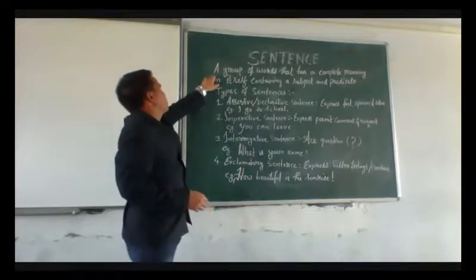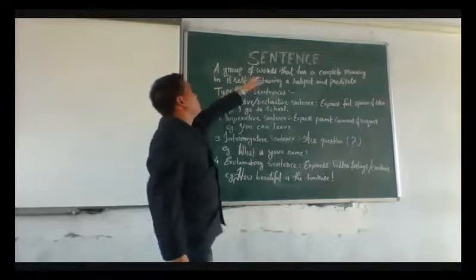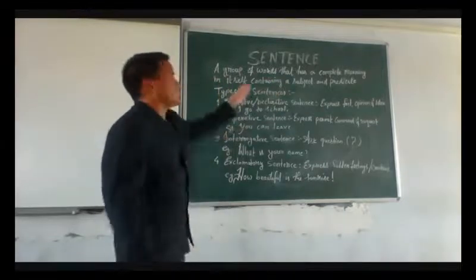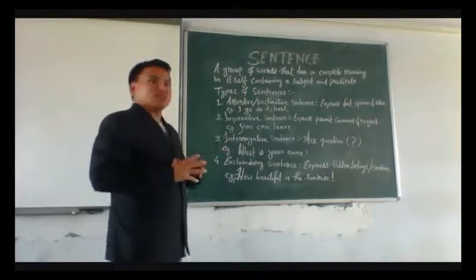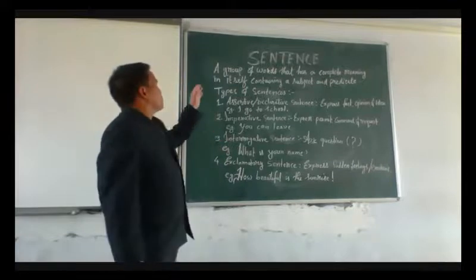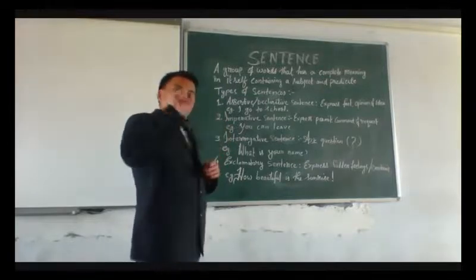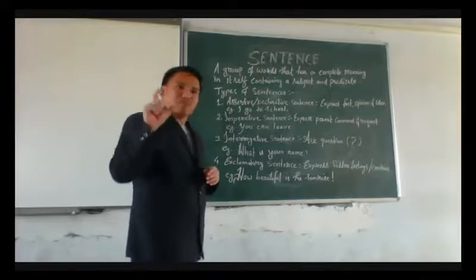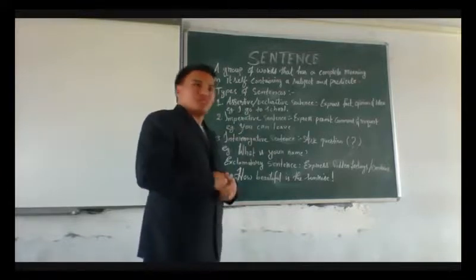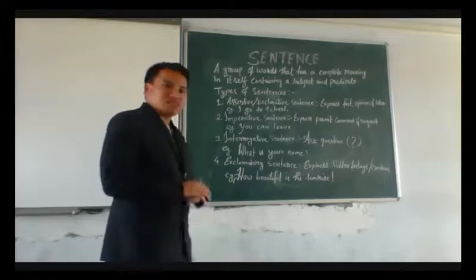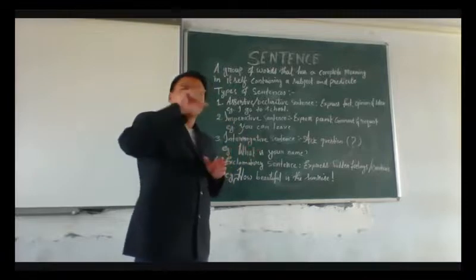When we come to the sentence, the definition says that a group of words that has a complete meaning itself, containing a subject and predicate. It says that a sentence is a group of words which is arranged in order so that it gives a complete meaning in itself, in which it contains a subject and a predicate. In simple terms, a sentence is a group of words that make a complete sentence.